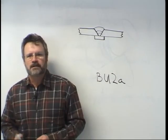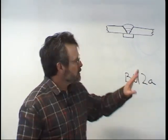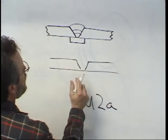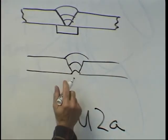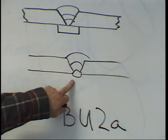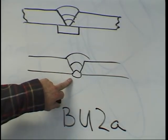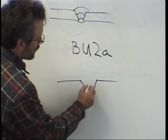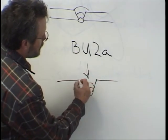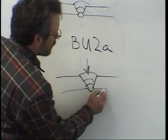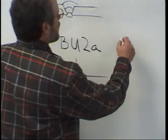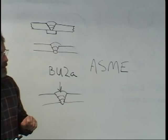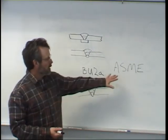Pre-qualified procedures are only allowed in two cases: first, where they have a backing strip, and second, where they back gouge and back weld it. There's no pre-qualified procedure for welding from one side with complete penetration without backing. That type of weld must be qualified by testing. The American Society of Mechanical Engineers requires that all of their procedures be qualified by testing. So the three types are: mock-ups, pre-qualified, and qualified by testing.